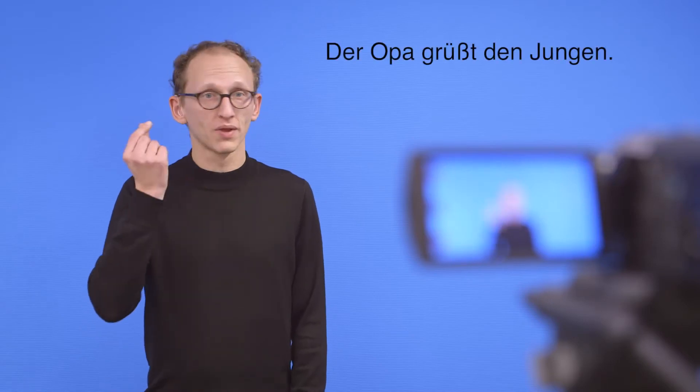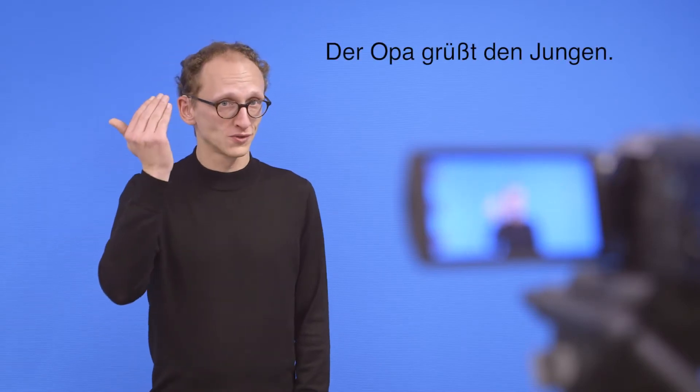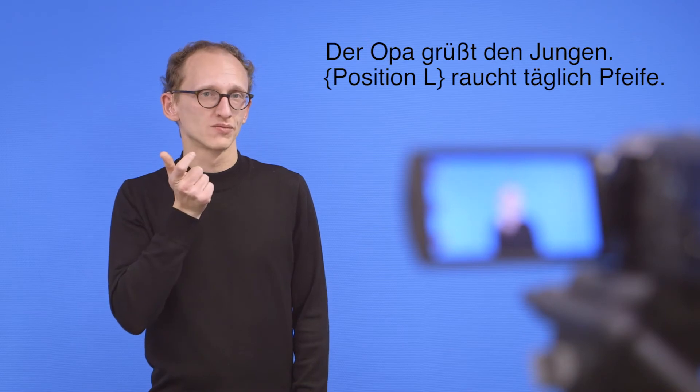Was wir jetzt in dem Experiment gemacht haben, ist, wir haben Sätze verwendet, in denen im ersten Satz nicht explizit auf einen Punkt gezeigt wird, sondern wir einfach nur den Opa und den Jungen einführen und in einem zweiten Satz, zum Beispiel durch Pfeife rauchen, einen ganz eindeutigen Bezug zu einer der beiden Personen herstellen.